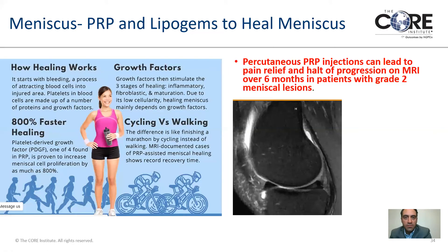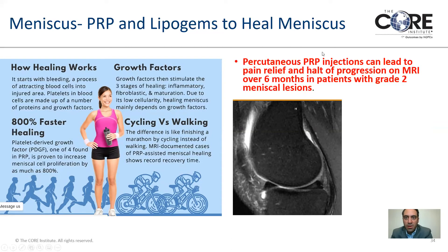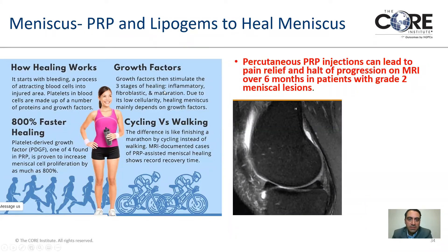One new technique we're using to treat the meniscus is PRP — platelet-rich plasma — which is part of regenerative medicine or stem cell therapies. Although there are no cells in the PRP, it is drawn from the blood and spun down, and then we inject the platelets into the site of injury, especially with lower-grade tears. These platelets then secrete growth factors and recruit cells to the site to help promote healing, promoting the inflammatory, fibroblastic, and maturation phases of healing.